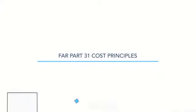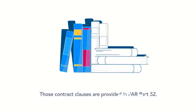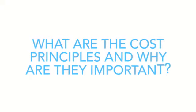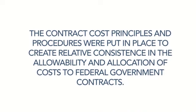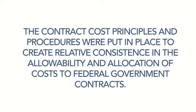In most cases, contractors must ensure they comply with contract clauses incorporated into the contracts they signed with the federal government. Those contract clauses are provided in FAR Part 52. Some of the contract clauses in FAR Part 52 make other parts of the FAR contractual requirements. This is the case with FAR Part 31, Contract Cost Principles and Procedures. FAR Part 31 is often referred to simply as the cost principles.